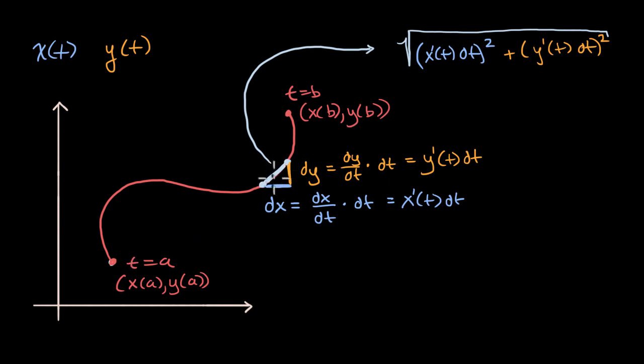Remember, this is this infinitesimally small arc length right over here. So we can actually factor out a dt squared, it's a term in both of these. And so we can rewrite this as, let me, so I can rewrite this, my big radical sign. So I'm going to factor out a dt squared here. So we could write this as dt squared times x prime of t squared plus, plus y prime of t squared.